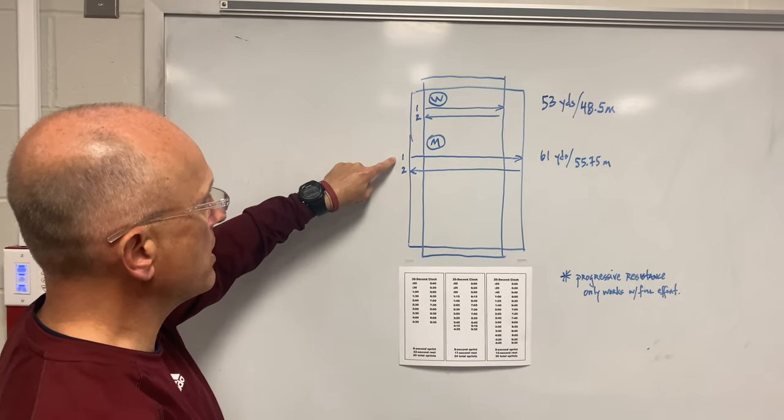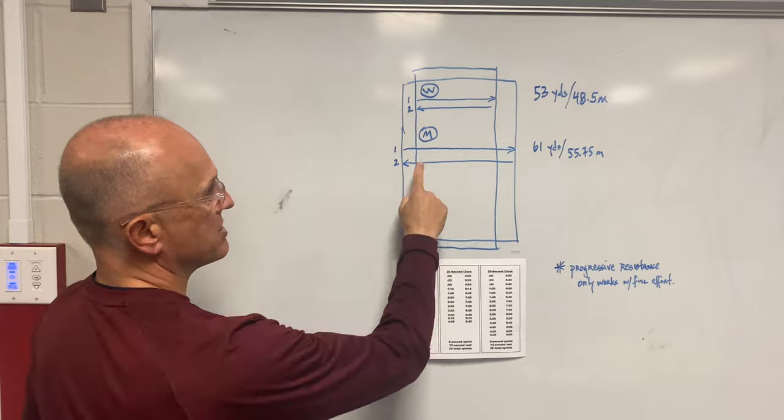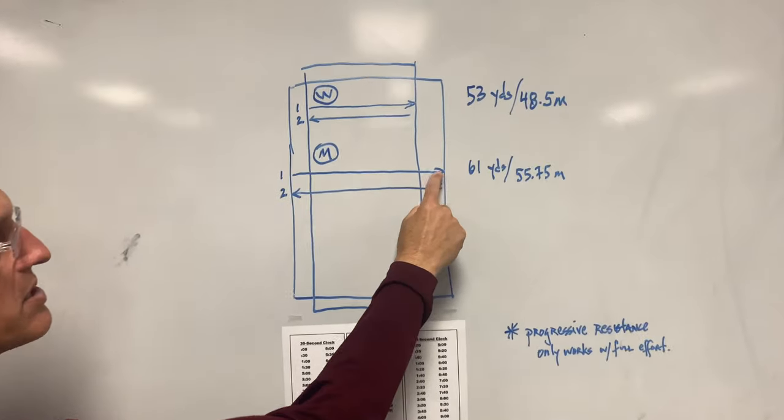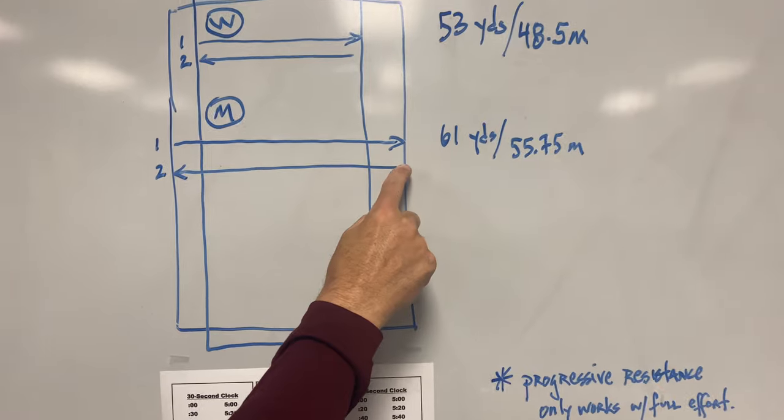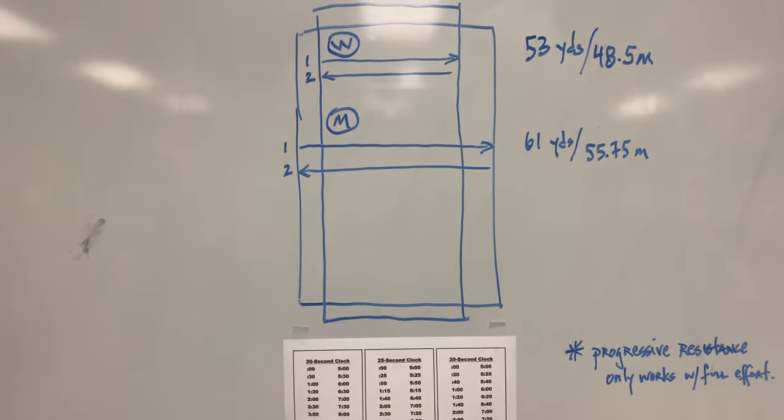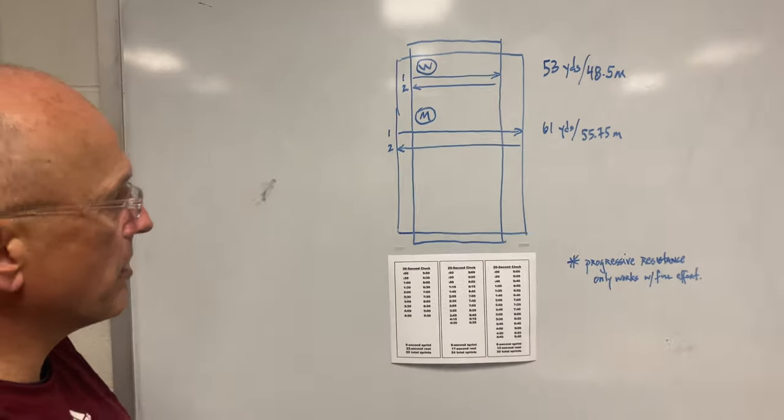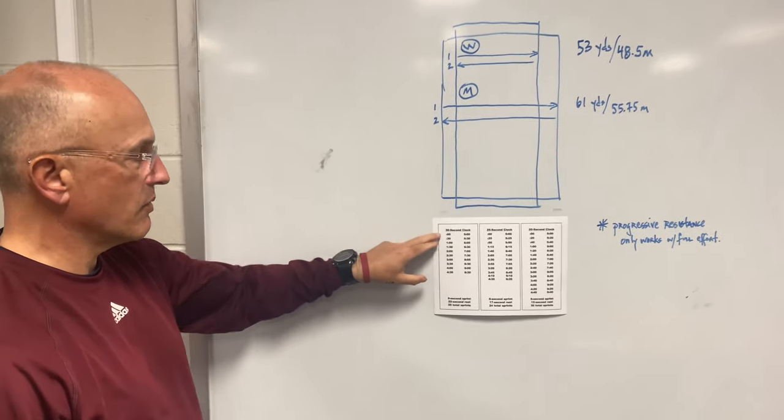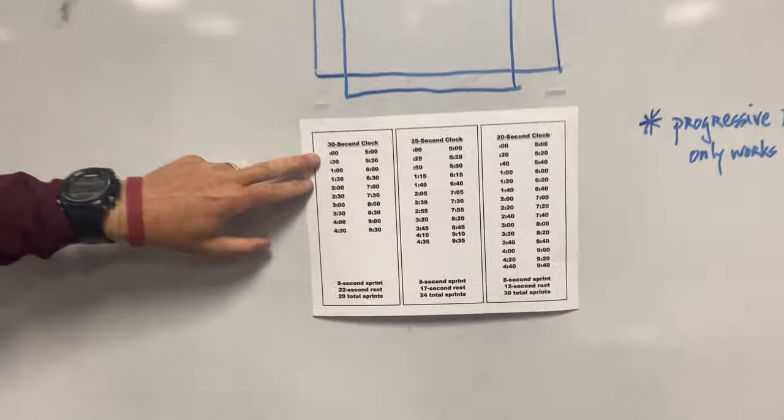The men do the same thing. It also takes them about seven or eight seconds to run the 61 yards across. They wait the remainder of the 30 seconds and then they sprint on the bottom of the minute back across. So you're starting your summer on a 30 second clock. If you want to pan down here, Toby, on a 30 second clock.